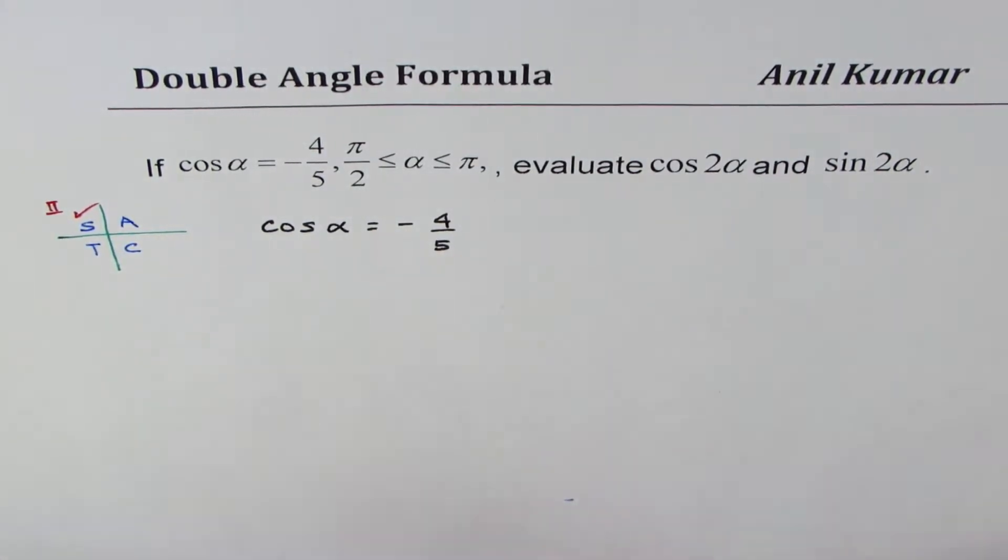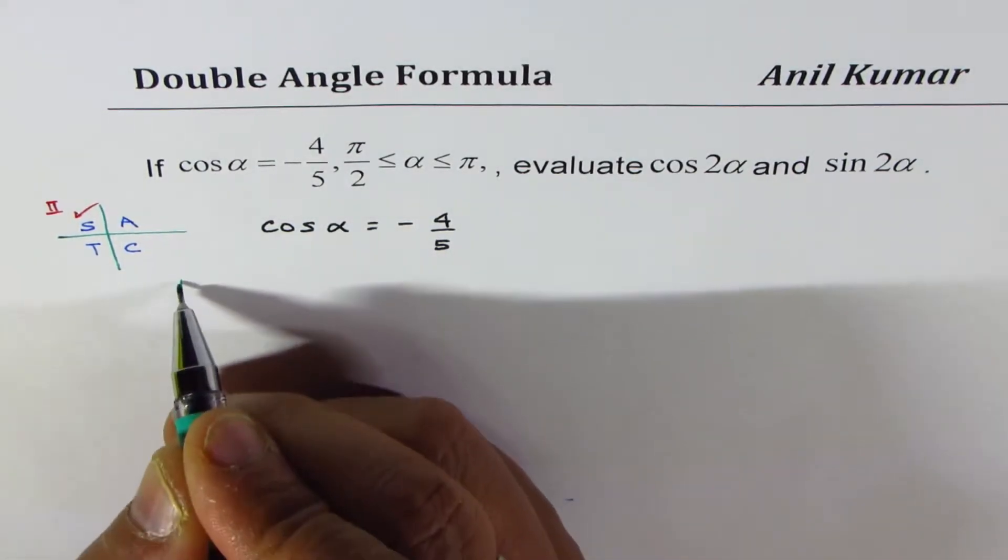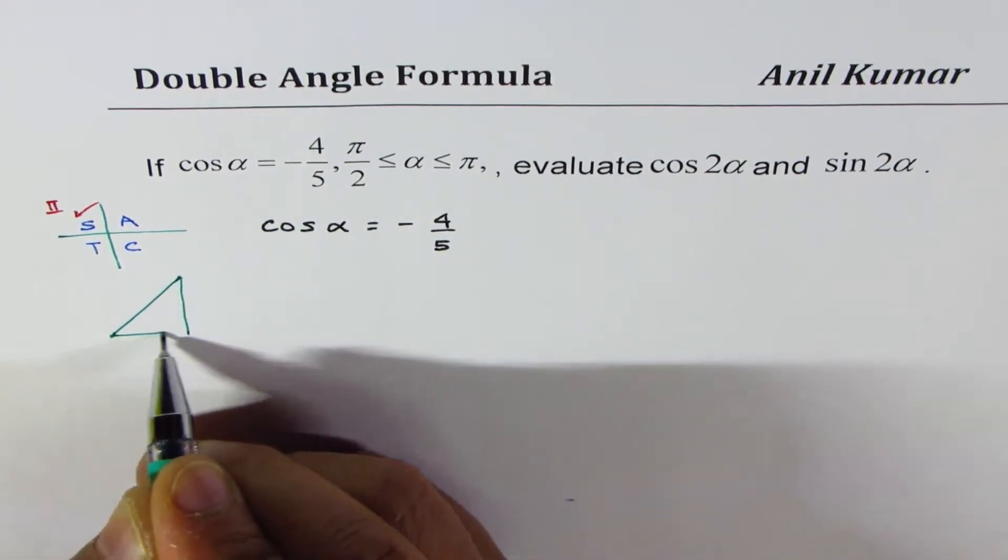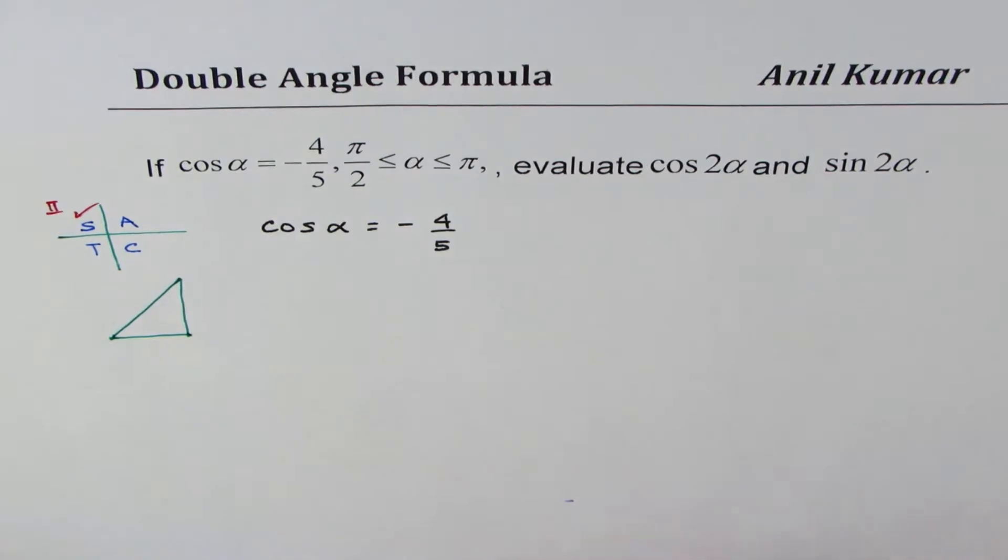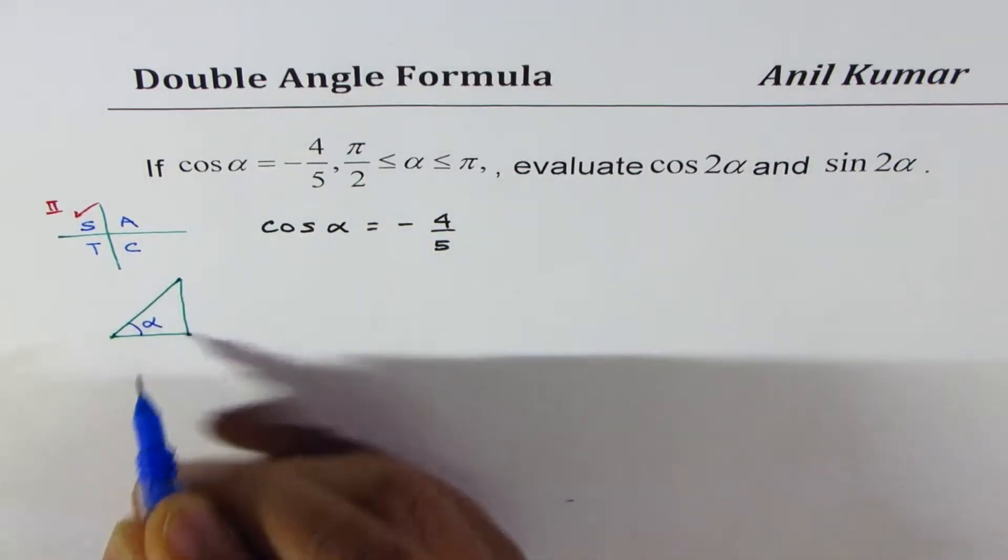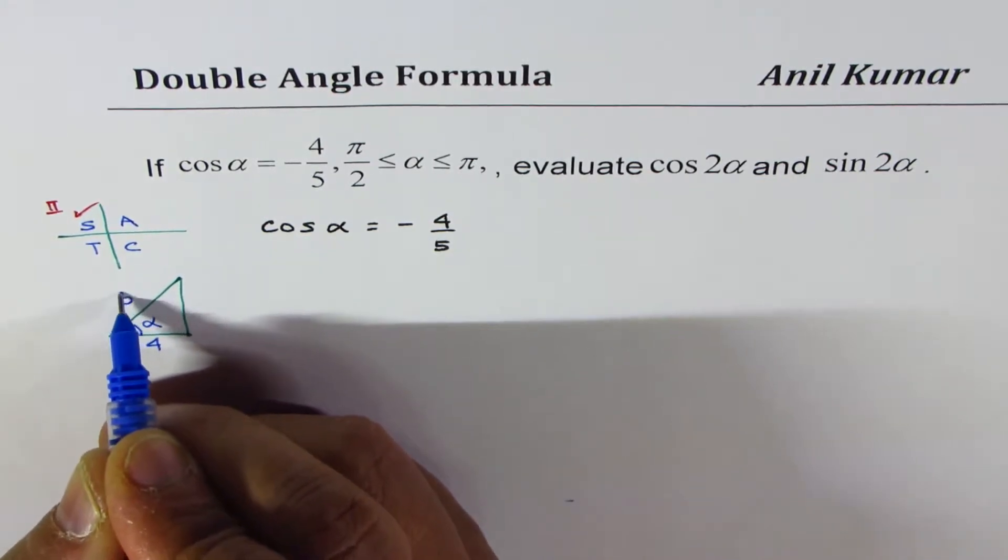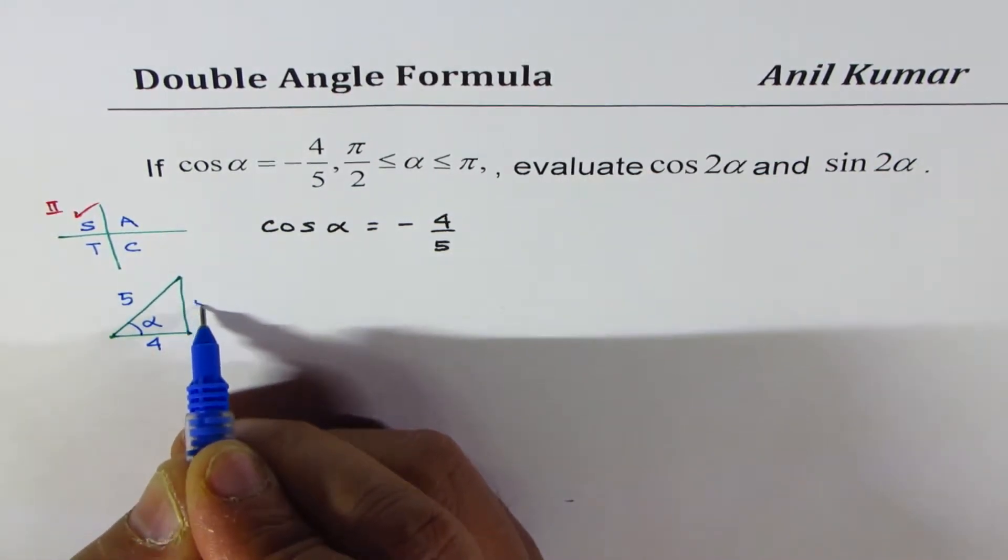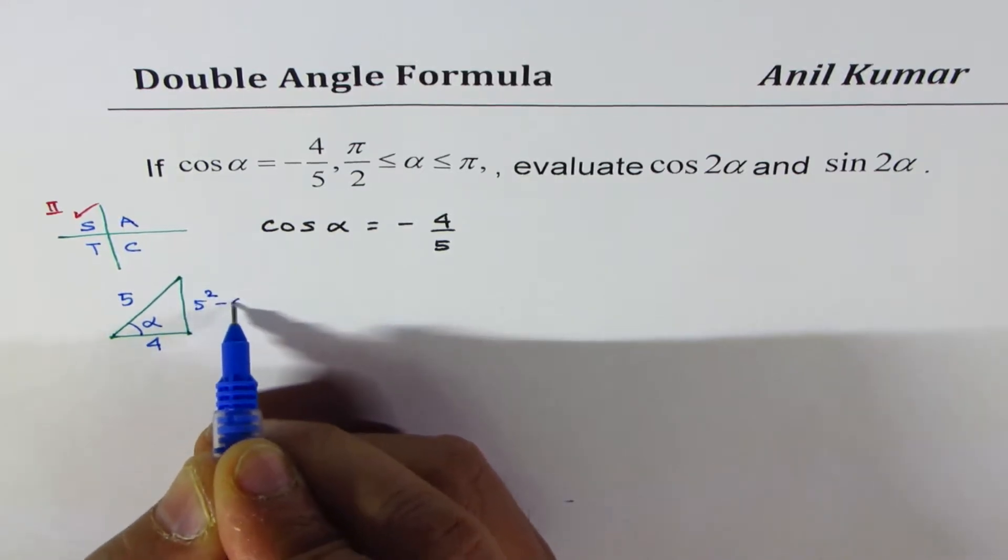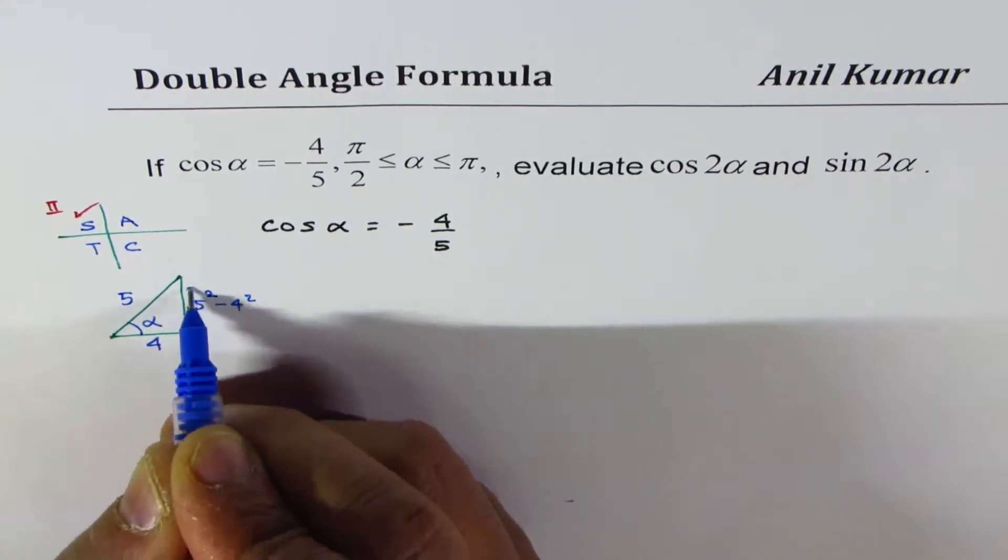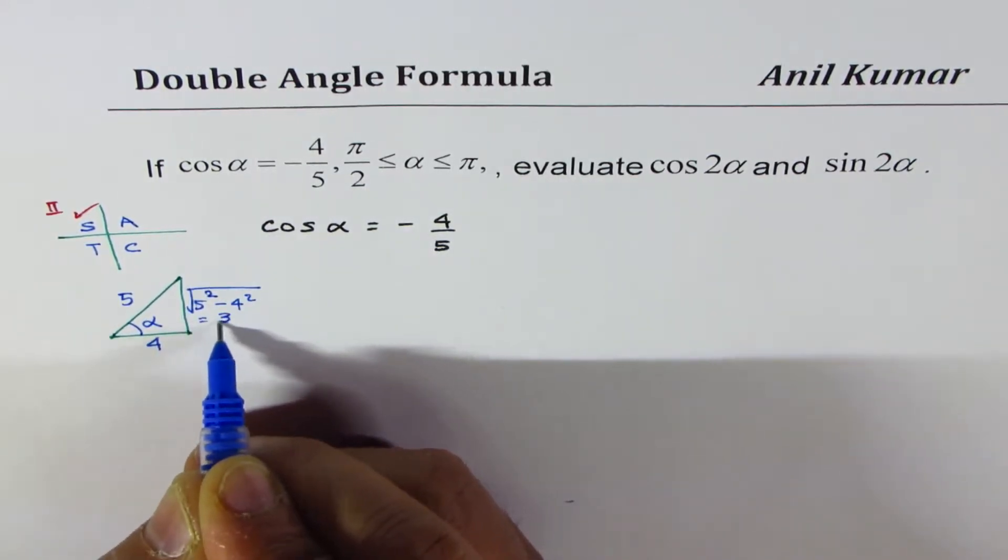Let us make a triangle, the right triangle, where dimensions 4 and 5, 4 angle alpha. So cos alpha means adjacent side over hypotenuse. So this side will be 5 square minus 4 square root, which is equal to 3.